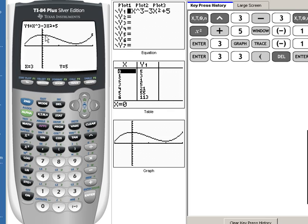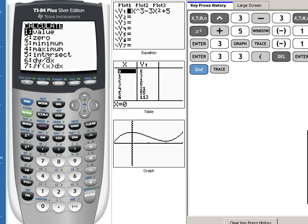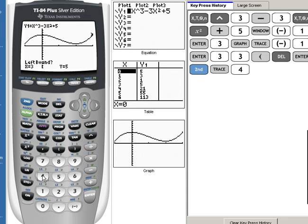Okay, back on my calculator screen, I could see that we have a maximum point here and we have a minimum point here. In order to find those two places, let's find our maximum first. We're going to do 2nd and then the trace key. You'll notice it opens up a new menu and number 4 is our maximum. So I'm going to choose number 4.